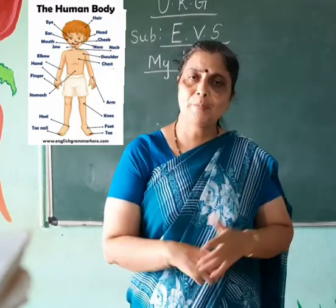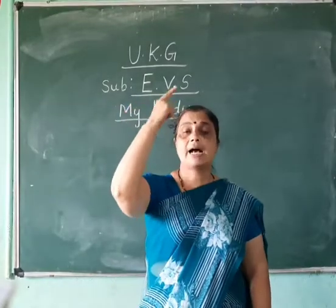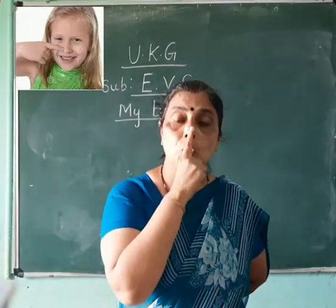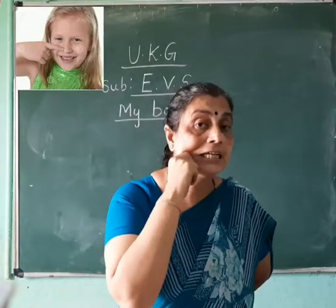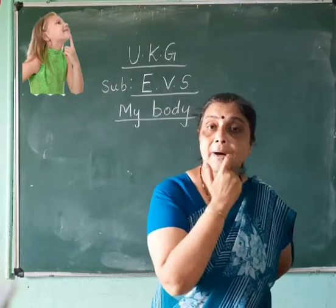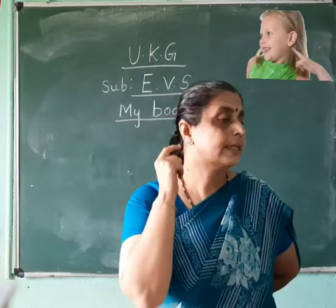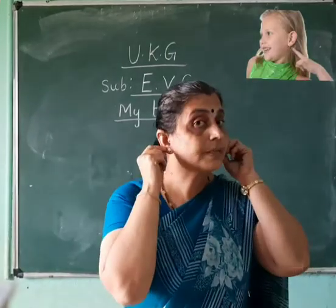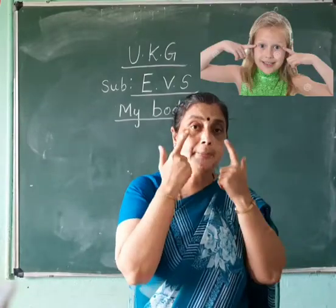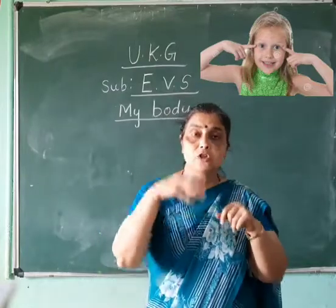Can anybody tell me? Point out and show me the parts: head, eyes, forehead, nose, chin, mouth, teeth, tongue, ears. How many ears do you all have? Two. How many eyes do you all have? Two eyes. So hair.